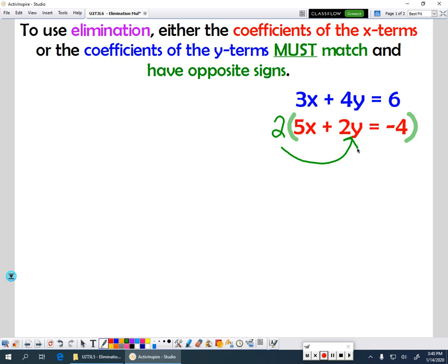So if I were to do that, though, we'd still have one other issue here. Look at these signs. Remember, they have to have the same coefficient, but they have to have different signs. So here's what I'm going to do. I know I want to multiply by 2, but in order to make it an opposite sign, I want this to become a negative 4. I'm going to have to multiply by negative 2.